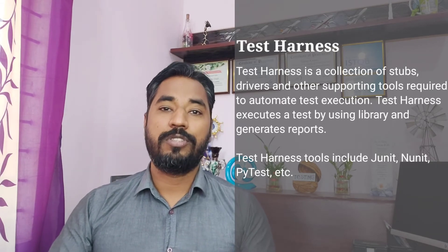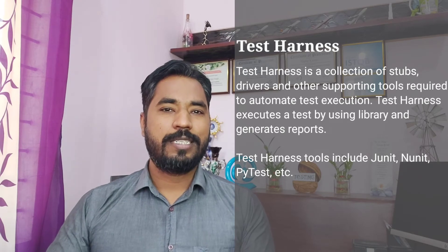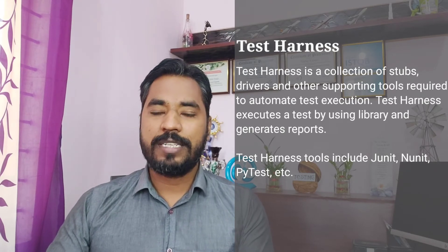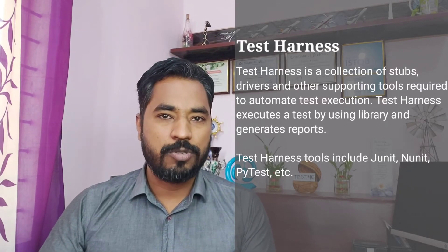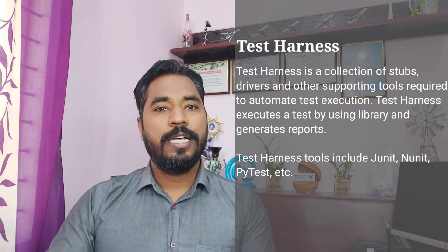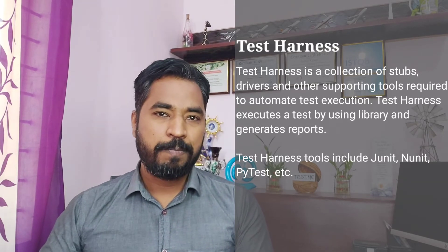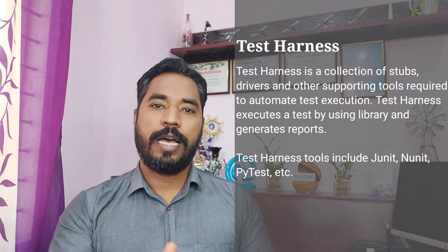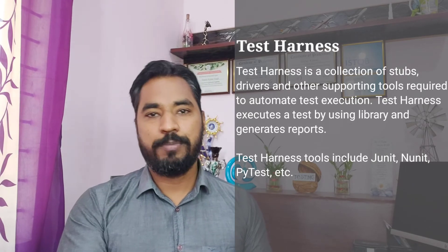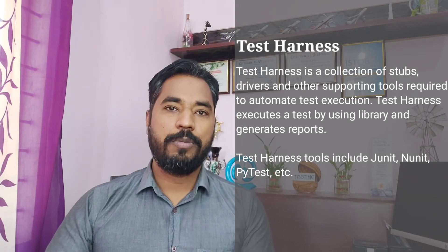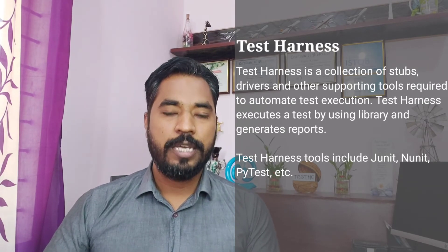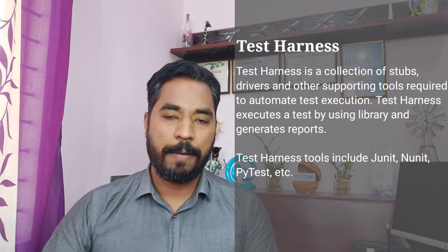A test harness has all the collection of necessary libraries, the reporting part, and can have test data or anything else in order to automate a test. A test harness tool example would be JUnit or NUnit. These are basically test harness tools or unit framework tools, but we cannot refer to them alone as unit frameworks because a single framework alone is not going to execute a particular test. You need the collection of stubs and drivers put together, including the libraries which will be imported to run. We import a package when we run a JUnit test and also make use of external frameworks like TestNG to get results.